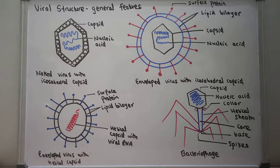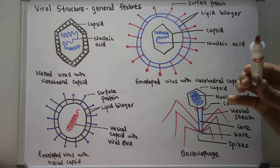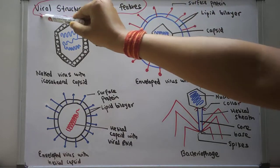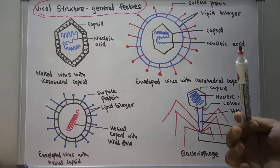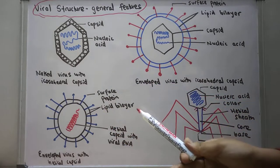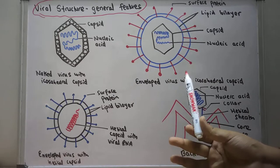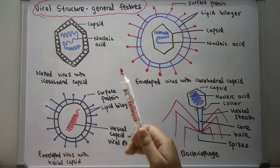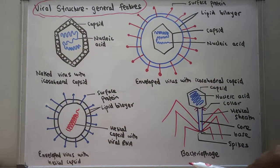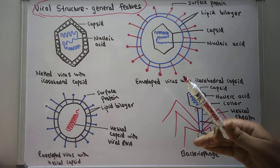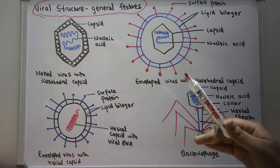Hello everyone. Today from this video we are going to start the virology chapter in microbiology. In this first video we are going to talk about the general structure of the virus and the various general features of the viral structure. You can see there could be four types of virus: the naked virus with icosahedral capsid, the enveloped virus with icosahedral capsid, the enveloped virus with helical capsid, and the bacteriophage virus.